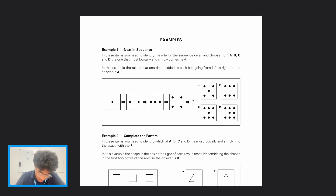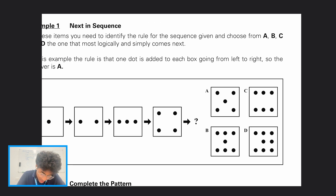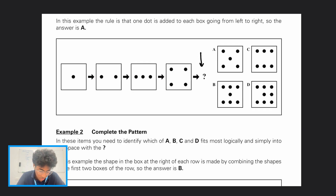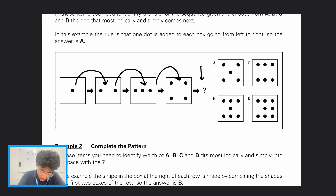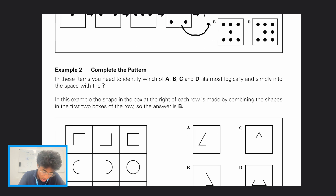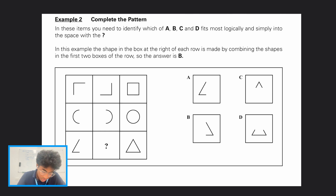There are two question types. The first is: what is the next image in the sequence? For example, looking at a pattern where the number of dots is increasing every image, we can assume the next one will have one more dot — so the answer is option A.